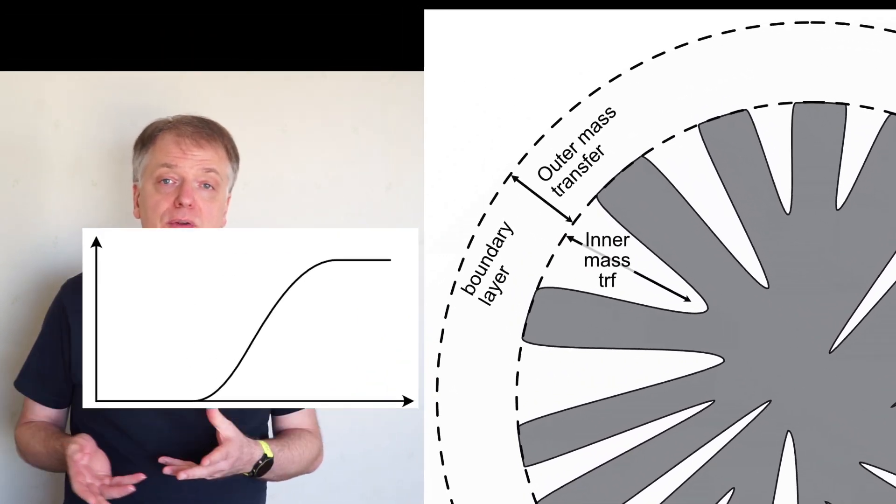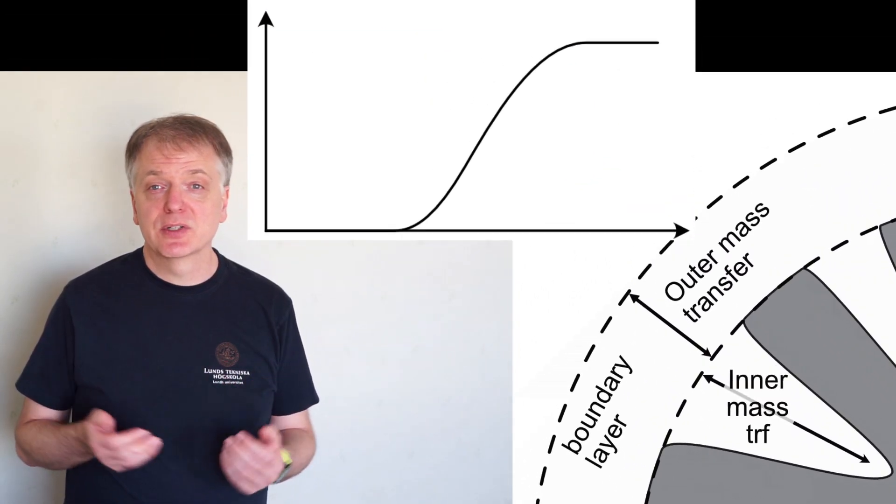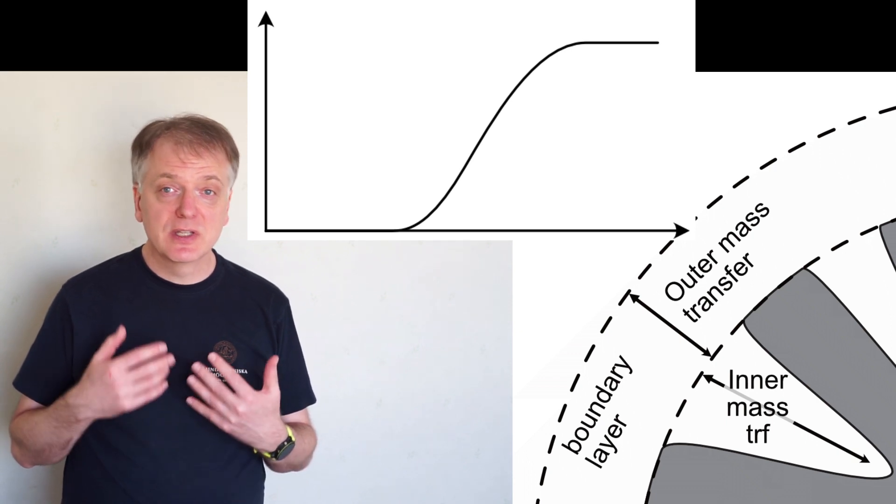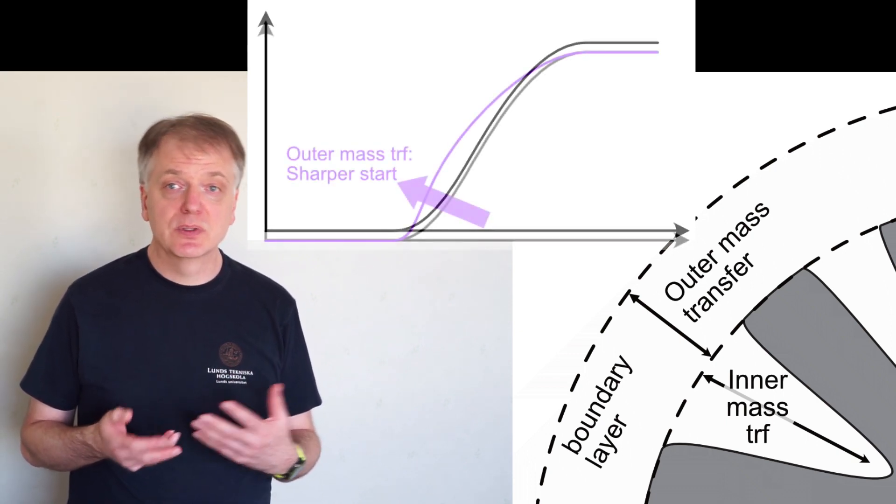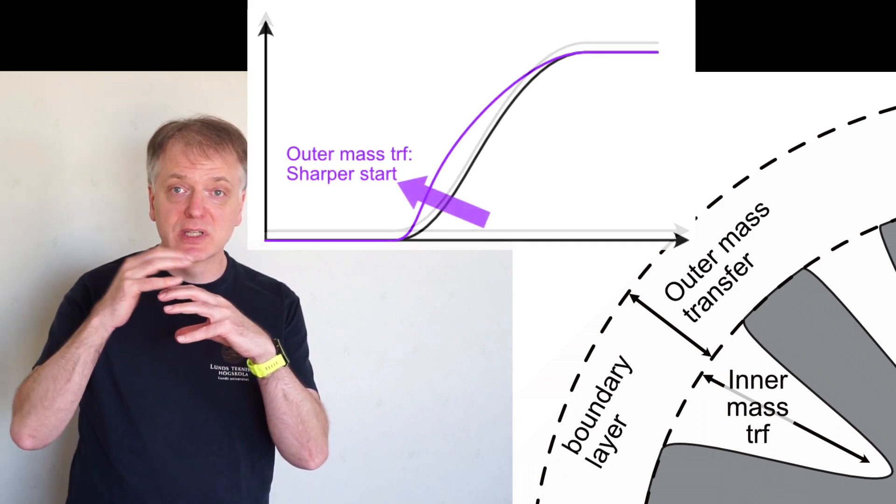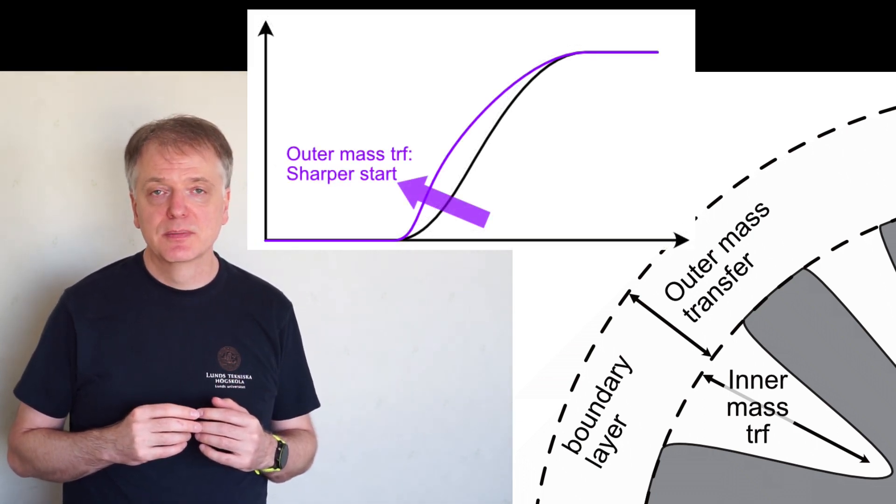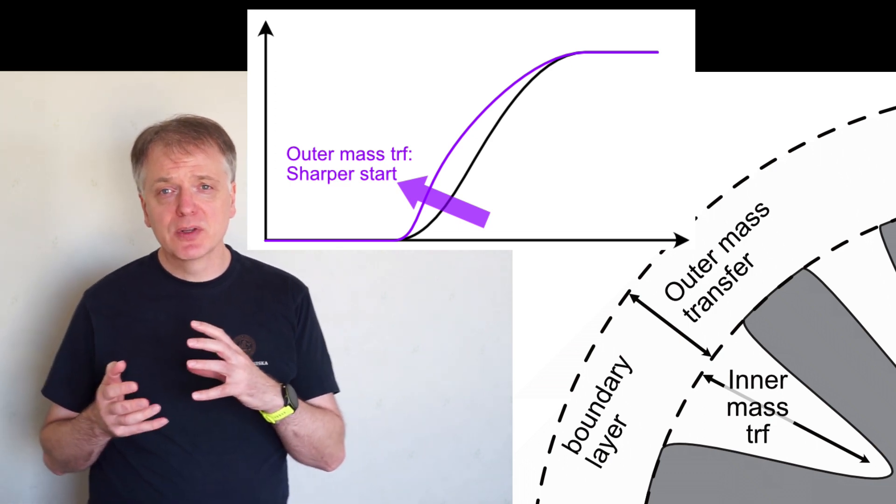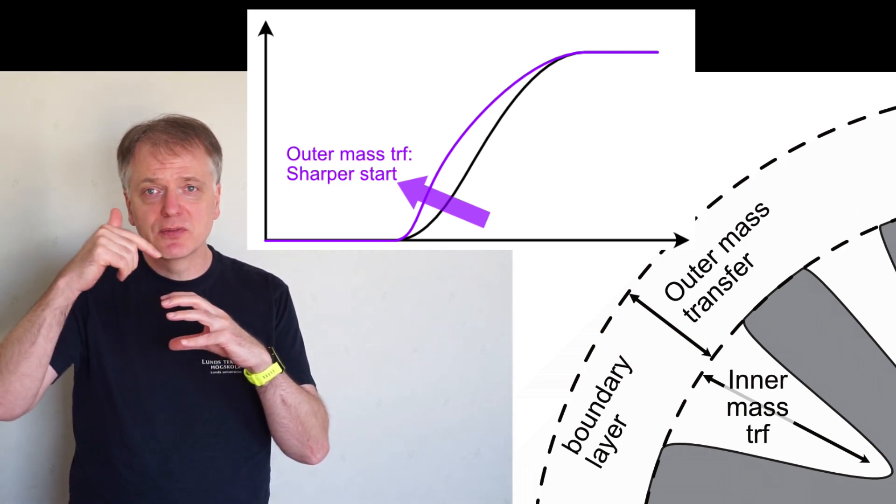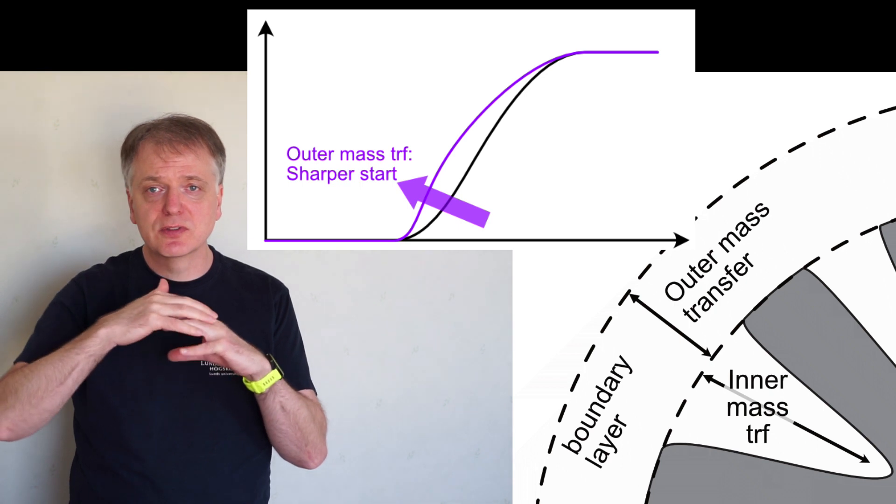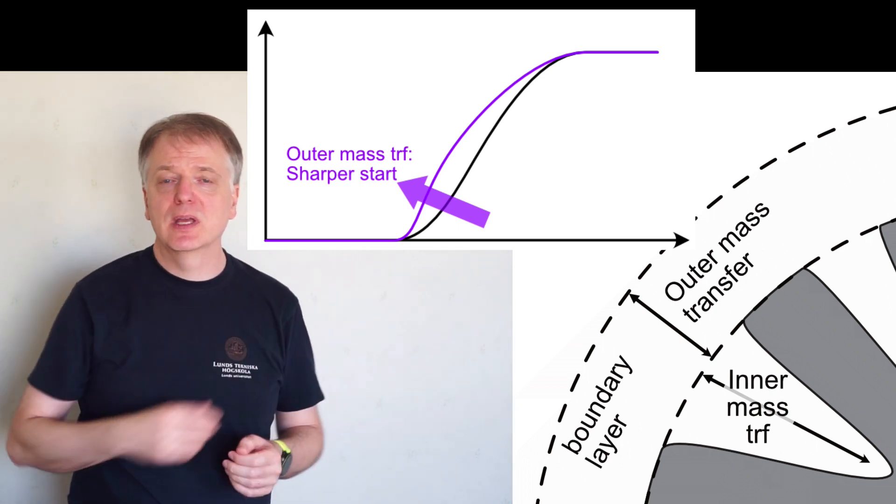A real breakthrough curve might also be asymmetrical. If there is significant outer mass transfer resistance due to a substantial stagnant layer outside the particle, the start of the breakthrough curve becomes steeper. This means some of the molecules did not have time enough to interact with the adsorption surface before they were swept through the entire column.